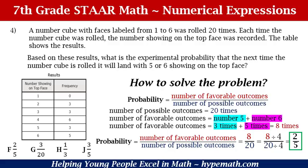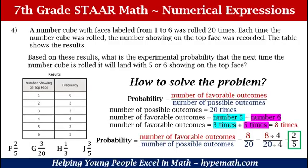How do we solve the problem? We use our probability formula: the number of favorable outcomes over the number of possible outcomes. Our denominator is 20 times — we know that because the question says the cube was rolled 20 times. That's our number of possible outcomes. To find the number of favorable outcomes, we're looking for it to land on either 5 or 6.